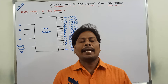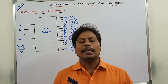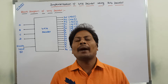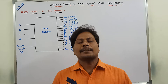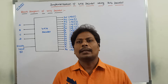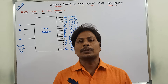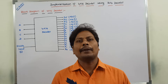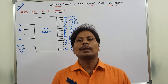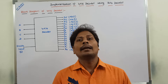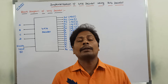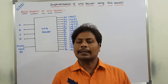Hi friends, today I am giving a lecture on implementation of a 4x16 decoder using a 2x4 decoder. In the previous video we have already discussed about how to design a 4x16 decoder and its block diagram, truth table, and logic diagram. Now in this video we have to discuss about how a 4x16 higher order decoder can be implemented by using a lower order decoder, that is the 2x4 decoder.